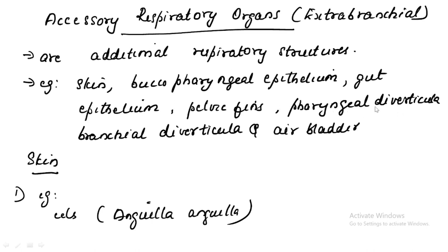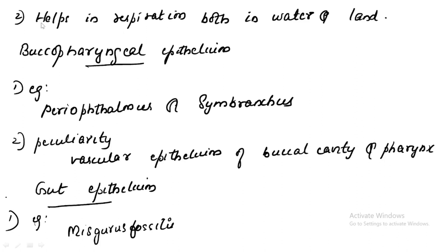Pharyngeal diverticula means some outgrowth from the pharynx. From the branchial — meaning gill — chamber, some outgrowth may originate and develop, acting as an accessory respiratory structure called branchial diverticula. Regarding skin as an accessory respiratory organ, the example is eels or Anguilla. In this fish, the skin assists respiration by taking atmospheric air, helping in both water and air respiration.